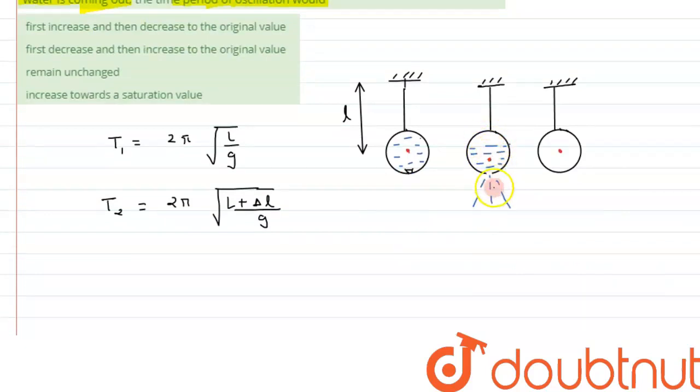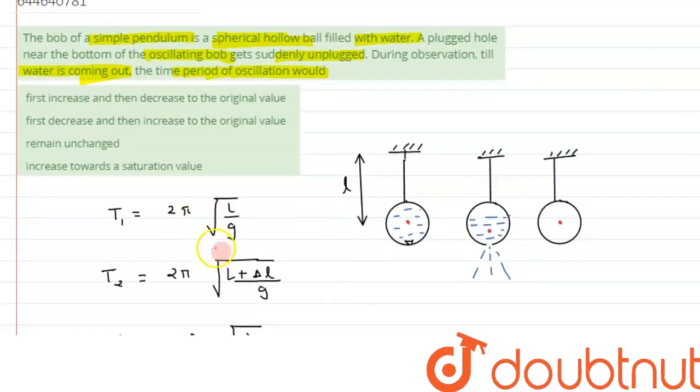Now as we can see, once the water gets completely empty, so third condition, the center of mass will come to its initial position and it would be the same, that is l by g.